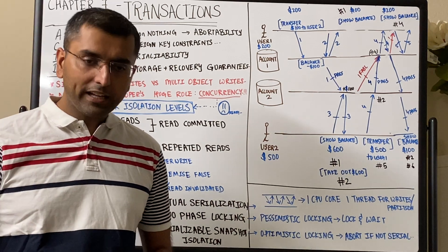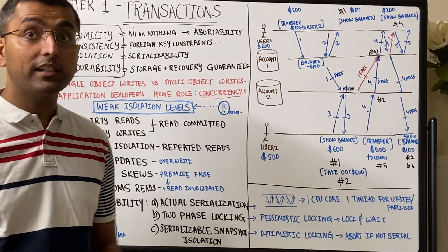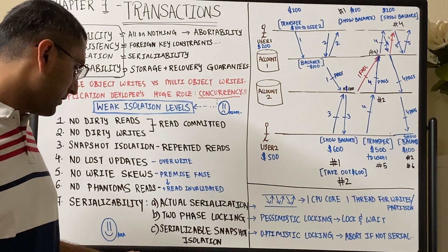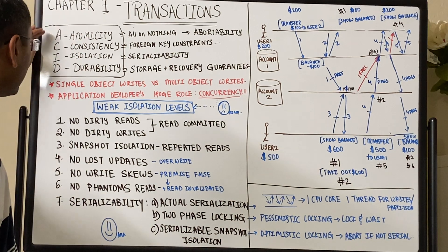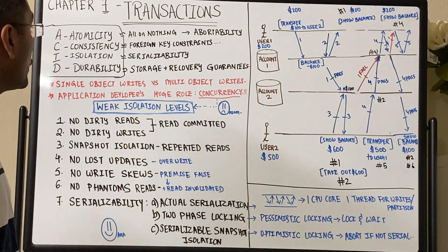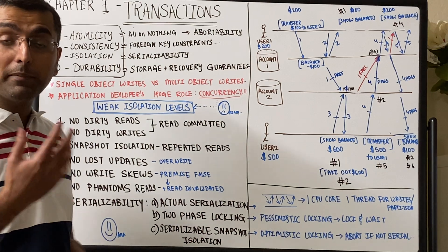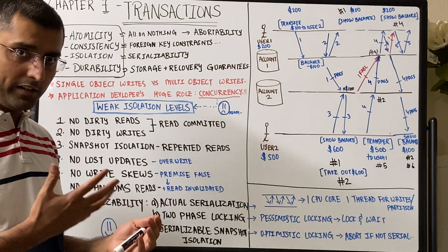There are a lot of guarantees that we depend on, especially from our databases, and those are ACID properties. So let's go into some of those guarantees and see if those are really supportive.